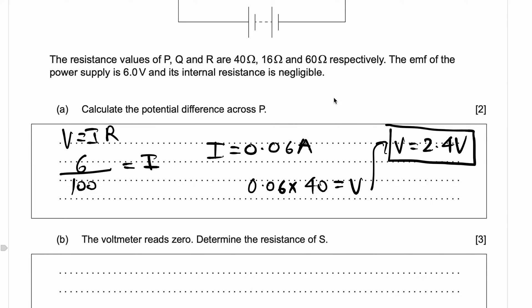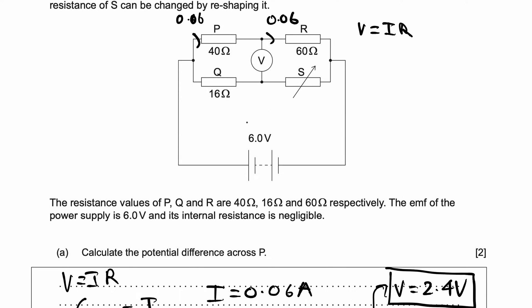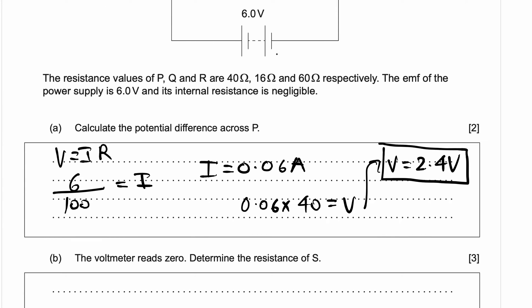Now they're asking: the voltmeter reads 0 — determine the resistance of S, our variable resistor. The key information is that the voltmeter reads 0. Keep in mind this is an ideal voltmeter, meaning it has infinite resistance, so we don't need to worry about external calculations.